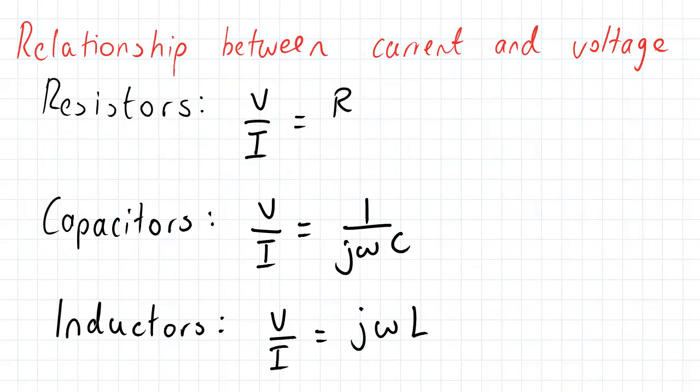So recall in our relationship between current and voltage, for resistors V over I, where V is a vector and I is a vector, is equal to R.